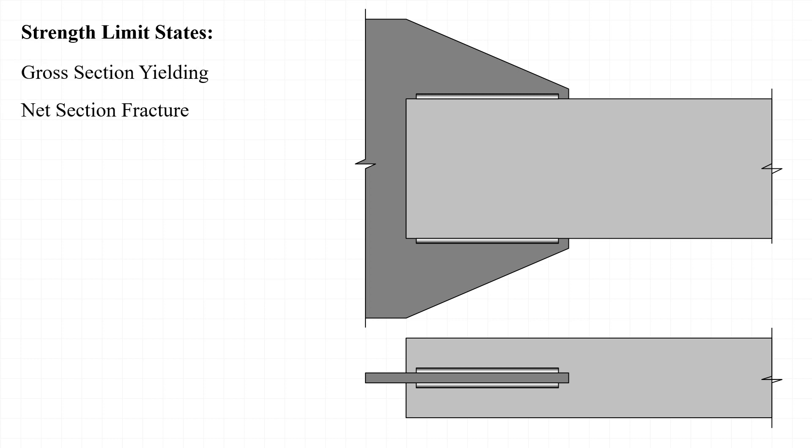We'll investigate the strength limit states of gross section yielding and net section fracture in this example problem. Gross section yielding is known as tension yielding in the AISC specification, and that occurs on a section that is sufficiently far away from the end of the member, usually about one and a half to two times a major dimension, or in this case, 18 to 24 inches away from the gusset. Net section fracture or tension rupture, as it's known in the AISC specification, occurs at the end of the member where material is removed to accommodate the connection. In this case, we'll cut a net section through the slot between the slot and the end of the weld, where there is a net section or material that's been removed, but where there isn't any connection between the HSS and the concentric gusset plate.